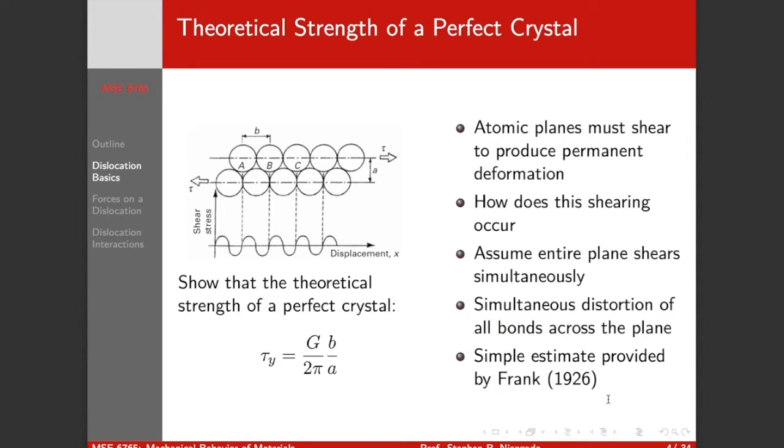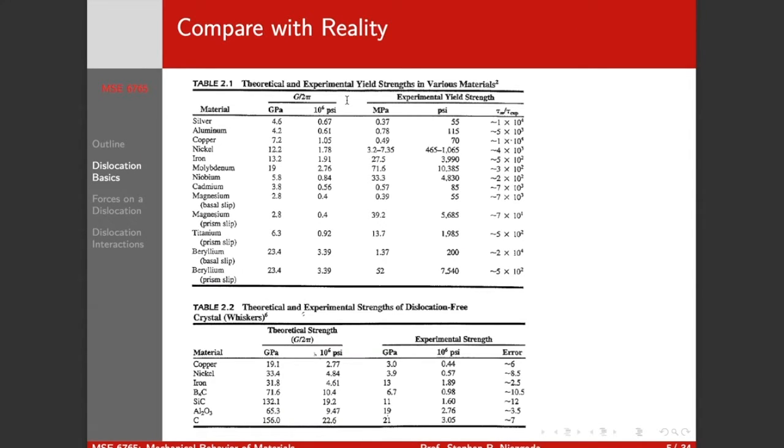There's other approximations depending on what sort of assumptions you make, you can get anywhere from roughly the shear modulus to about G by 20, but it's all roughly in this order of magnitude G by 2π. And this estimate was first done by Frank in 1926. The problem was when we compare this to reality, for example, silver has a theoretical yield strength of 4.6 GPa, but a well annealed single crystal of silver had experimentally measured yield strengths of less than a megapascal or roughly a factor of 10,000 difference.